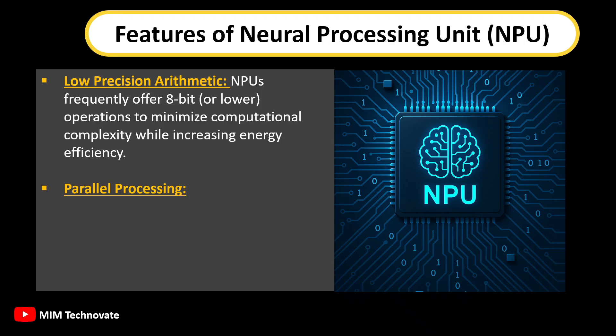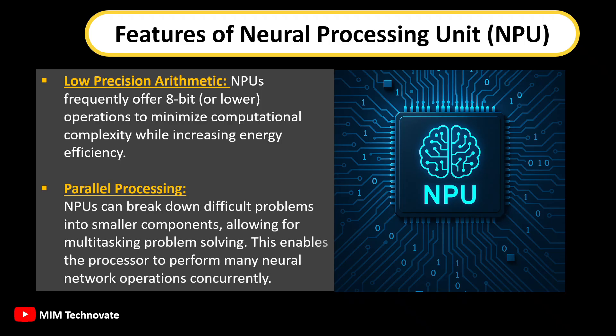Parallel Processing: NPUs can break down difficult problems into smaller components, allowing for multitasking problem-solving. This enables the processor to perform many neural network operations concurrently.